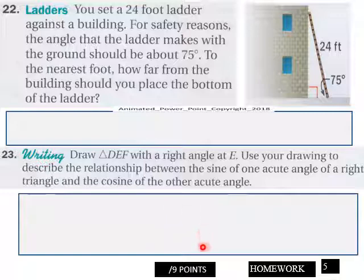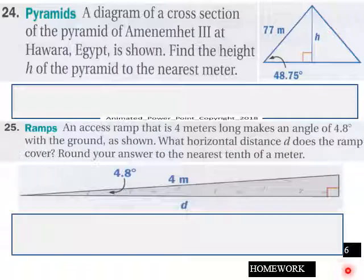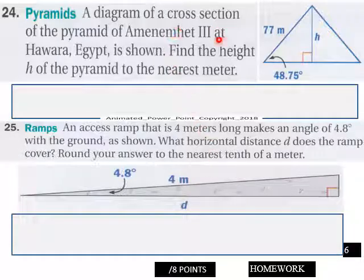Page six, pyramids up here. Find the height h of the pyramid. Find h to the nearest meter. And then you got a ramp question here, round your answer to the nearest tenth of a meter. You got eight points here, page six.